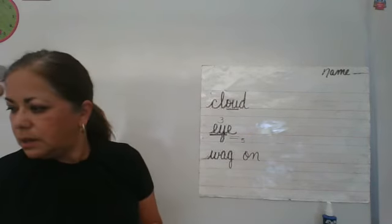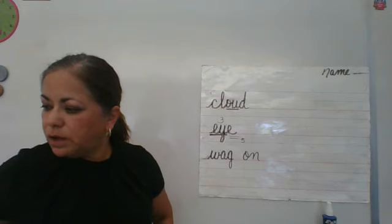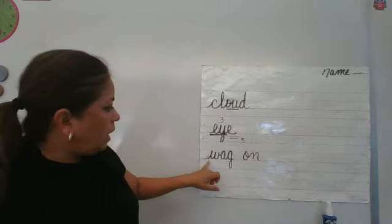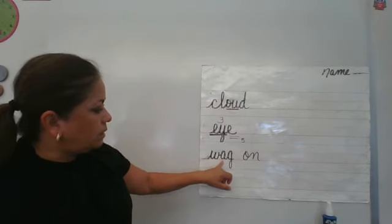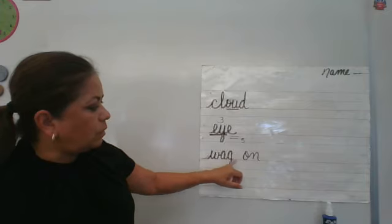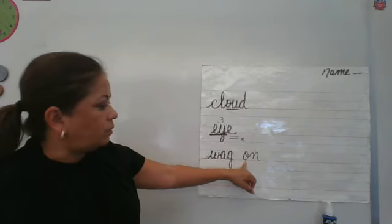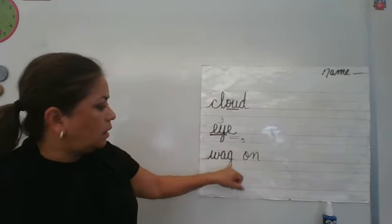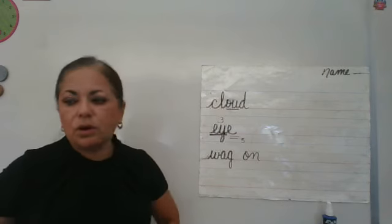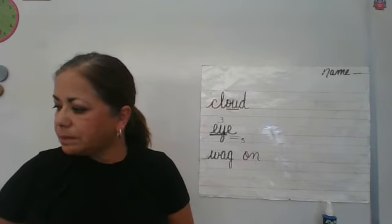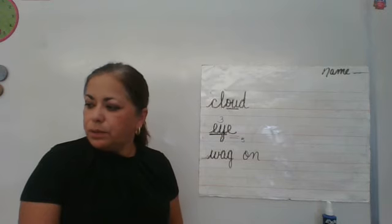Wagon. There are no multiletter phonograms. The A says its first sound, O-U says its first sound, and G-J says its first sound. There are no markings in wagon.